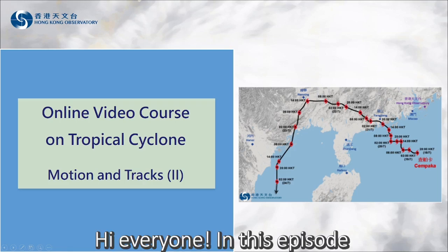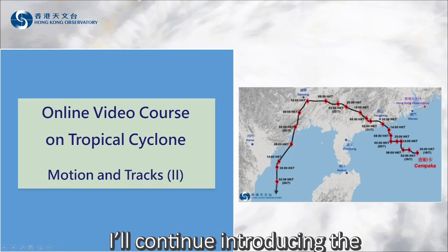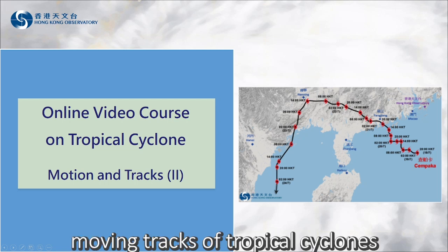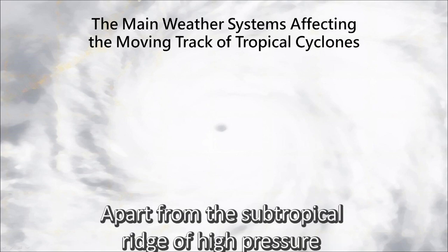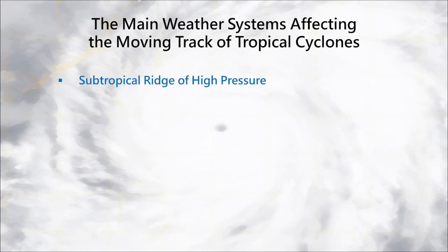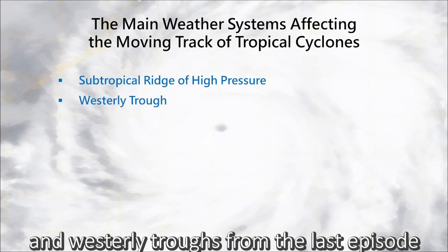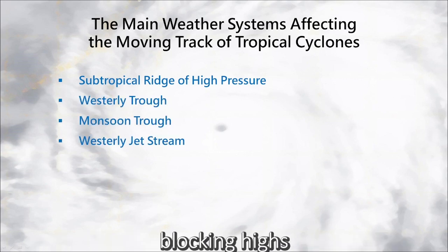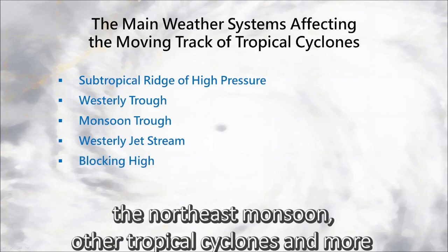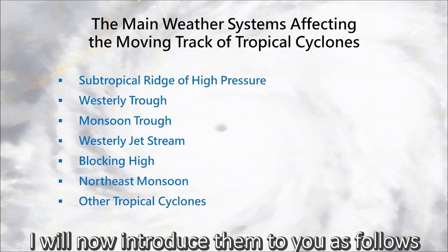Hi everyone! In this episode, I'll continue introducing the moving tracks of tropical cyclones. Tropical cyclones' moving tracks can be affected by different weather systems. Apart from the subtropical ridge of high pressure and westerly troughs from the last episode, there are also monsoon troughs, westerly jet streams, blocking highs, the northeast monsoon, other tropical cyclones, and more. I'll now introduce them to you as follows.